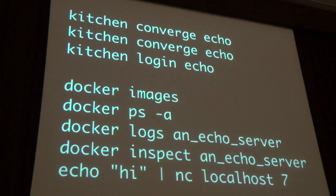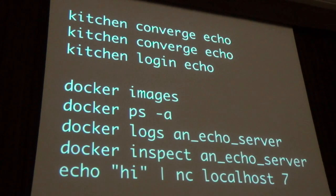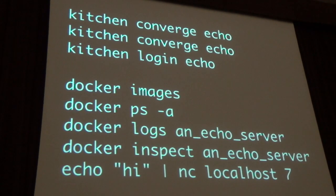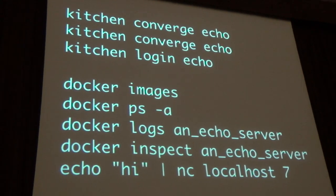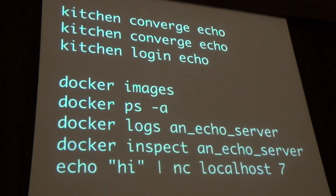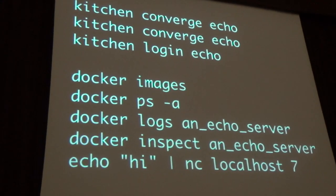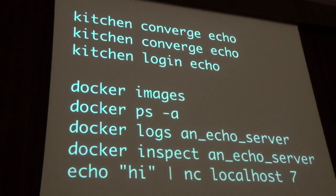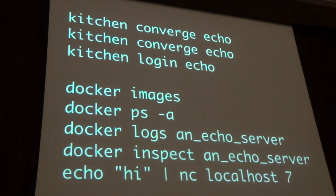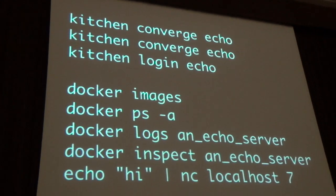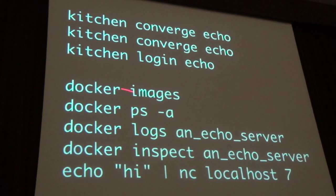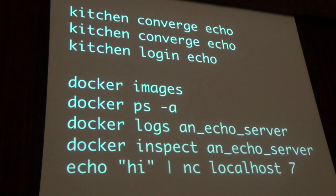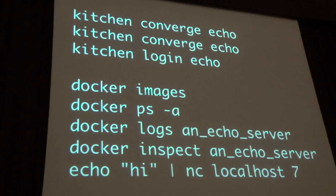We wrote this simple recipe, so we run 'kitchen converge echo' and then do it again — because the last one ran every time. As you're developing, when you write a recipe for the first time you want to run it twice to make sure it's not firing every time. Once you're confident it's converged to the state you want, you log in and go looking around — docker images, docker ps, look at the logs, inspect the container.